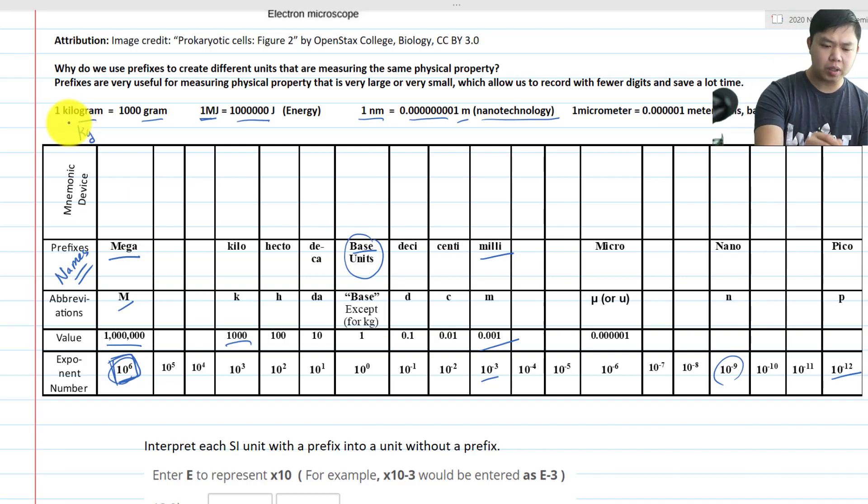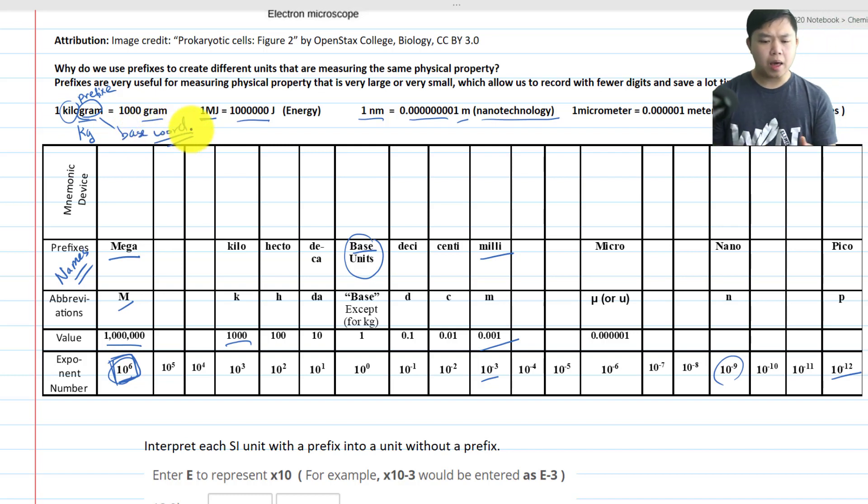For example, like this. We have kilograms. See how kilo is the prefix? This is the base word. And we already know that out of the 7 SI base units, except for kilograms, it's the only one with the prefixes. The rest of them is actually the base word itself. So keep that in mind.